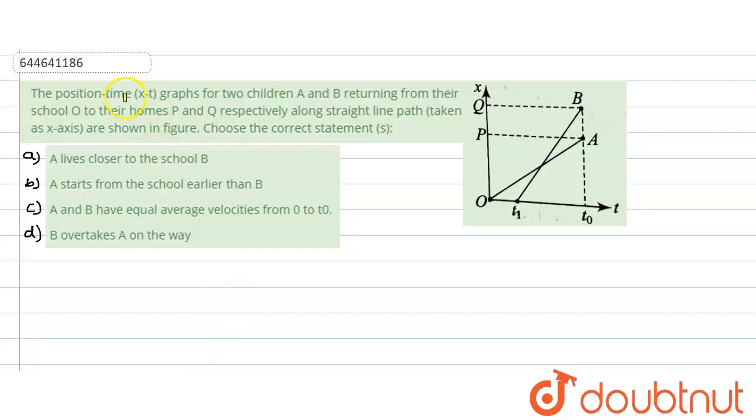In this question, what is given? The position-time graph of two children A and B returning from their school O to their homes P and Q respectively along two straight line paths as shown in the figure. Now we need to choose the correct statement.